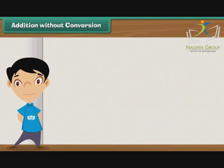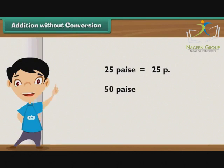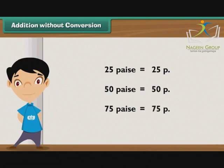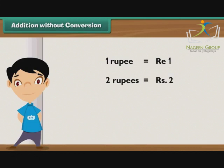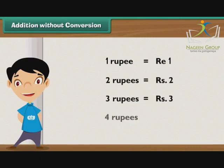Addition without conversion. We can write 25 paise as 25 paise. In the same way, we can write 50 paise as 50 paise and 75 paise as 75 paise. We can write 1 rupee as Rupee 1. In the same way, 2 rupees can be written as Rupees 2, 3 rupees as Rupees 3, 4 rupees as Rupees 4, and so on.